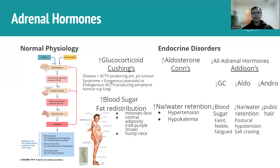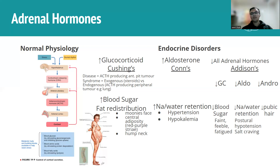Conn's syndrome is caused by excess aldosterone. Aldosterone's role is to increase water retention by promoting sodium reuptake in the kidneys, leading to high blood volume and therefore hypertension — the main thing to know. You also get hypokalemia, because the kidneys exchange sodium for potassium, and that potassium is lost in the urine.